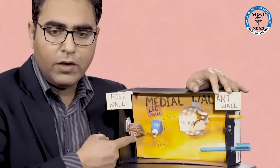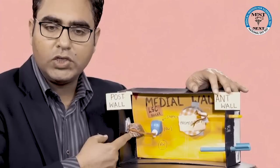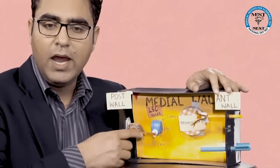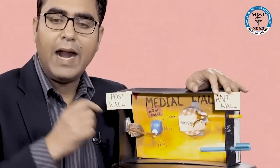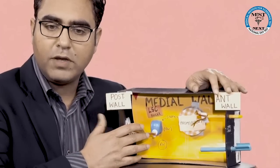Now let me come to the posterior wall. The posterior wall has a projection called the pyramid. From the pyramid, which muscle comes out? Stapedius muscle comes out and that attaches to the stapes. Now focus on the posterior wall — can you see this wooden thing? This wooden thing represents the pyramid, which is a projection on the posterior wall of the middle ear. Can you see these orange fibers? They represent the stapedius muscle, and then you have a blue knob-like thing that represents the stapes.